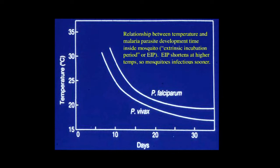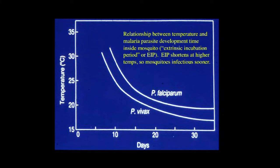The time it takes the mosquito to become infectious is temperature sensitive. Below about 16 or 17 degrees Celsius for vivax, the line becomes asymptotic — it takes forever for that parasite to develop. You cannot have malaria if you don't have enough warm degree days. That's why malaria is a tropical disease. As temperature increases, mosquitoes become infectious much more quickly. The counter-force is that if it gets really hot, mosquitoes don't survive as long. This development time is actually an exponential term in the vectorial capacity equation.